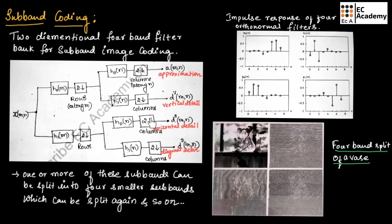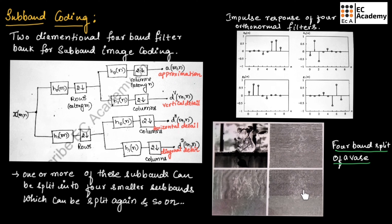This block diagram shows the two-dimensional four-band filter for subband image coding. The input image is two-dimensional and produces four subbands: approximation, vertical detail, horizontal detail, and diagonal detail. The impulse response of four eight-tap orthonormal filters is shown. As an example, a four-band split of a vase image yields four subbands: approximation, horizontal detail, diagonal detail, and vertical detail.